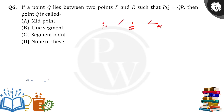Q divides the line segment PR into two equal parts, so it can be called the midpoint of the line segment. So option A is the right answer.